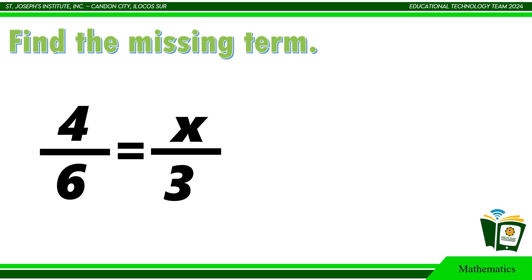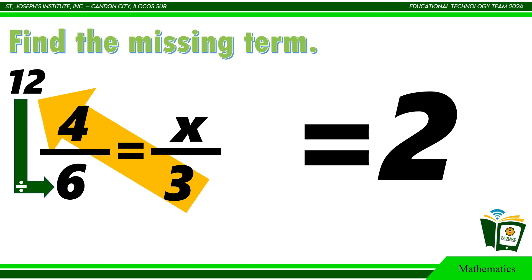There are different ways to find it. First is this. Do cross multiplication. Multiply 3 by 4. The answer is 12. Then divide it to the 1 without a partner which is 6. 12 divided by 6 equals 2. That is now the missing term.